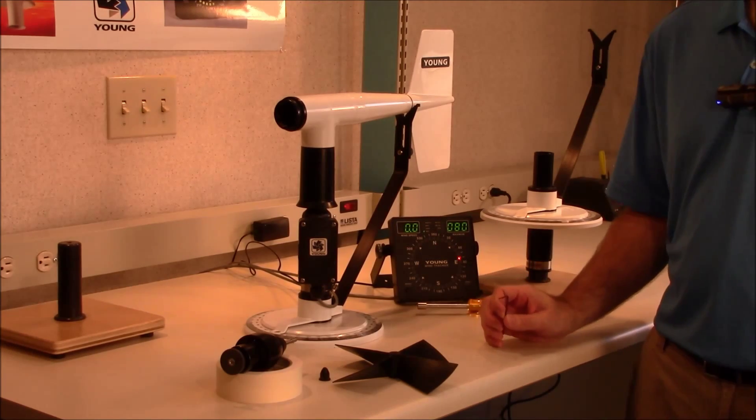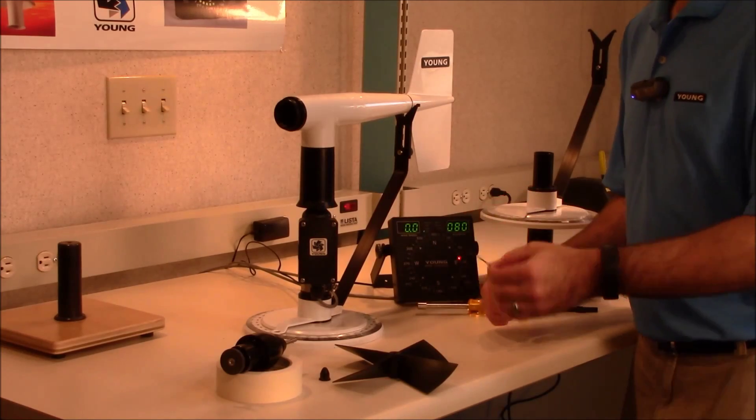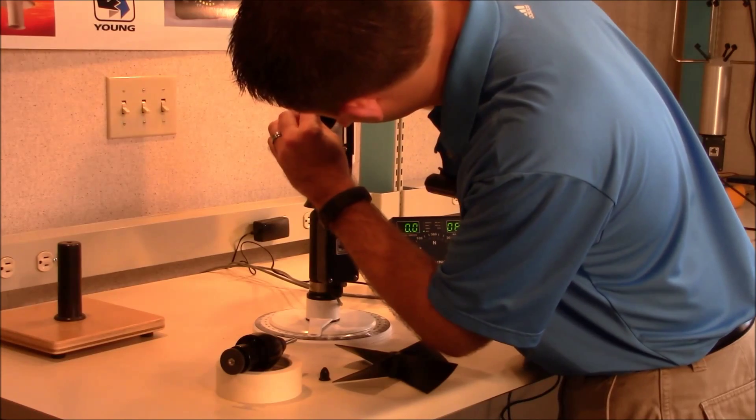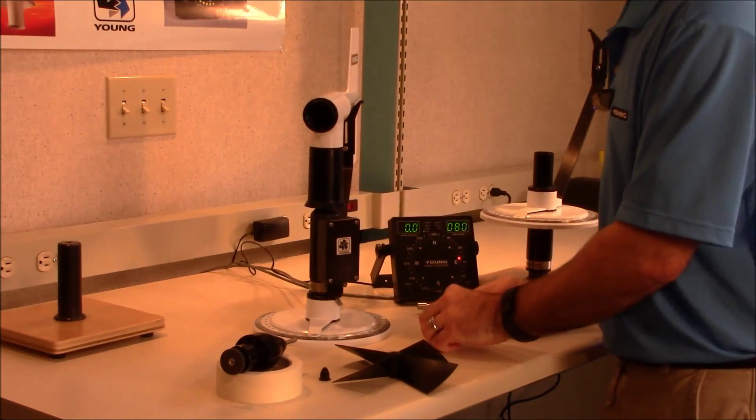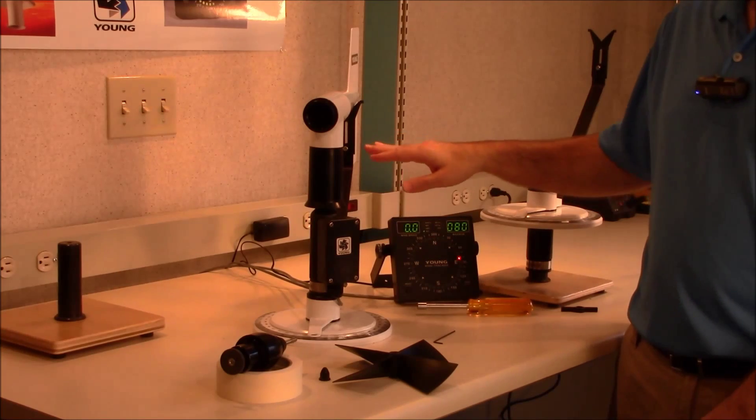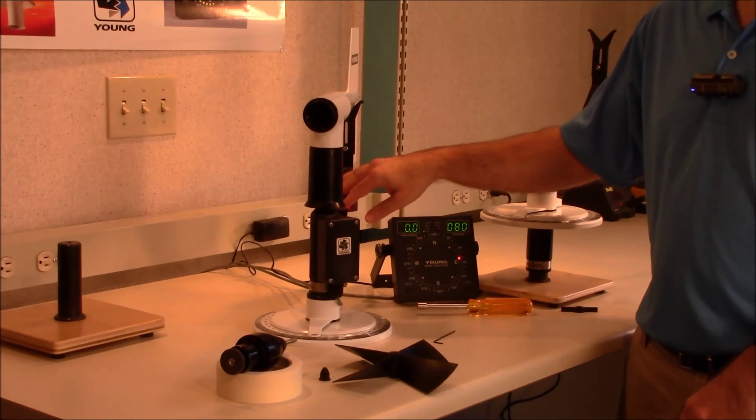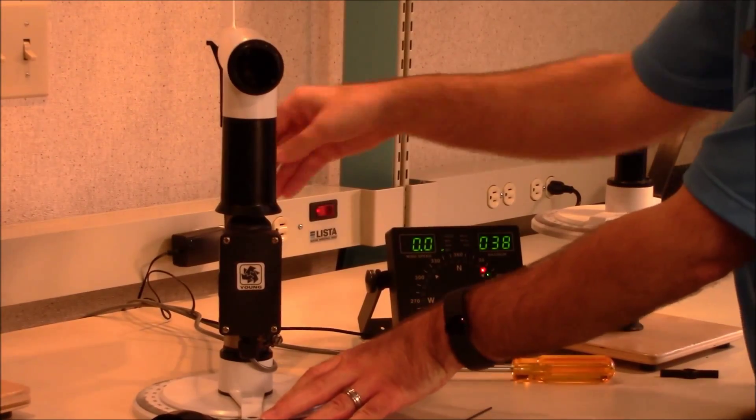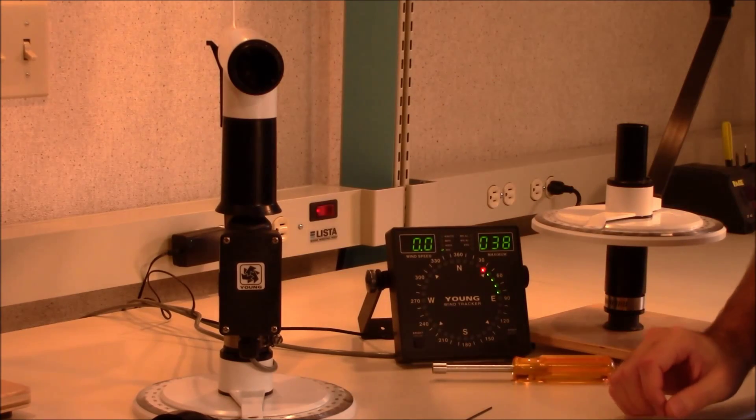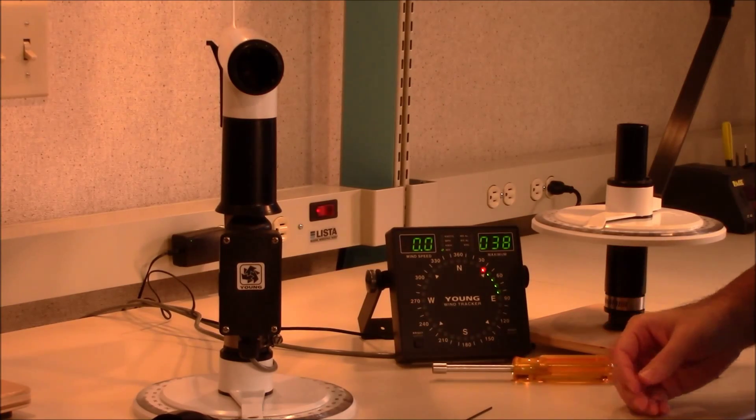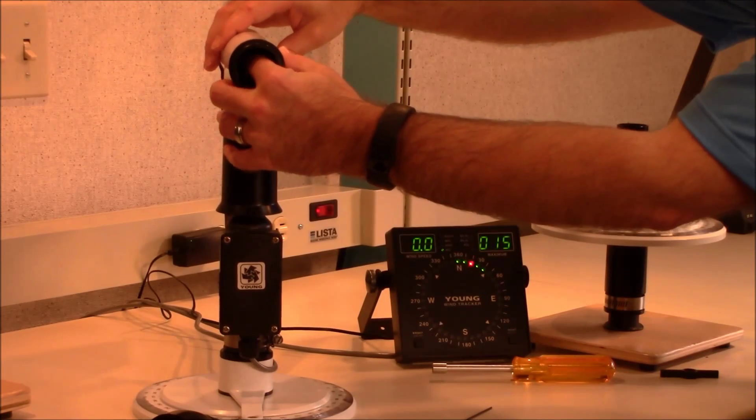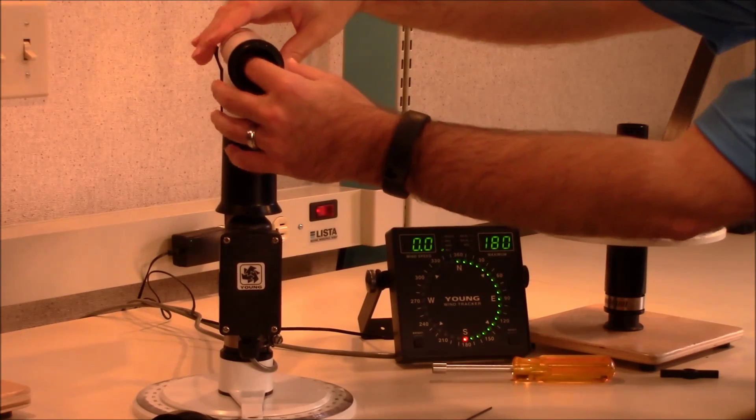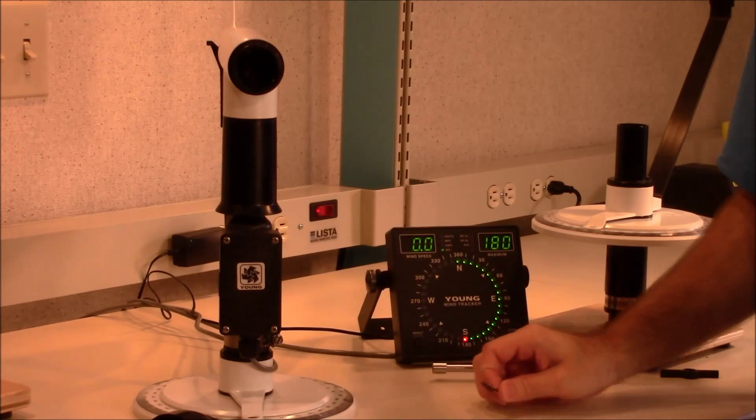First, we'll need to loosen the set screw in the coupling. Using your hex wrench, loosen that set screw a little bit. You'll need to turn the wind monitor to face 180 degrees, and then turn the thumb wheel until your display is reading 180 degrees. Now we can tighten the set screw again.